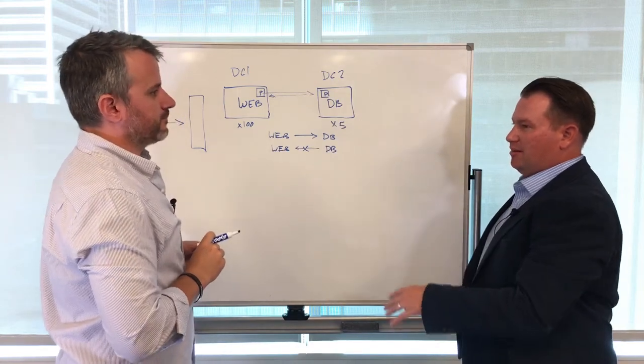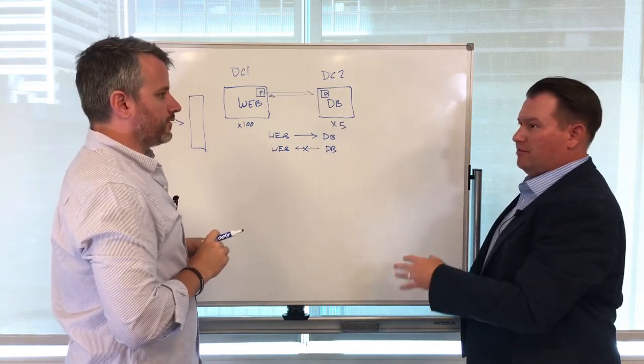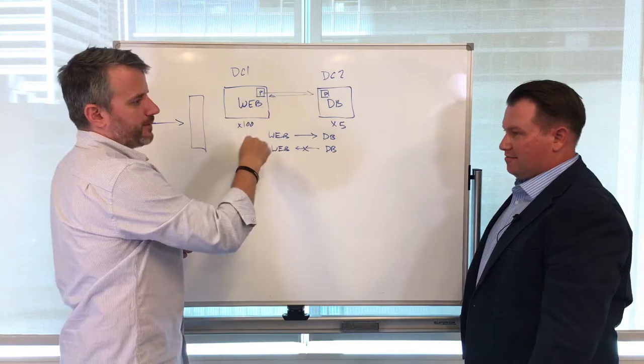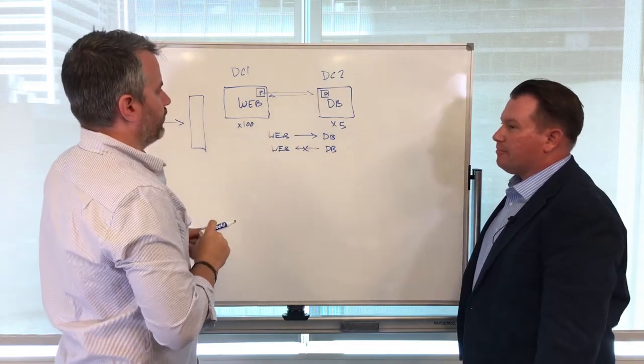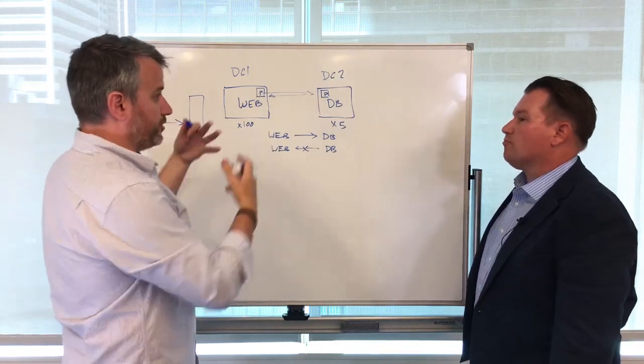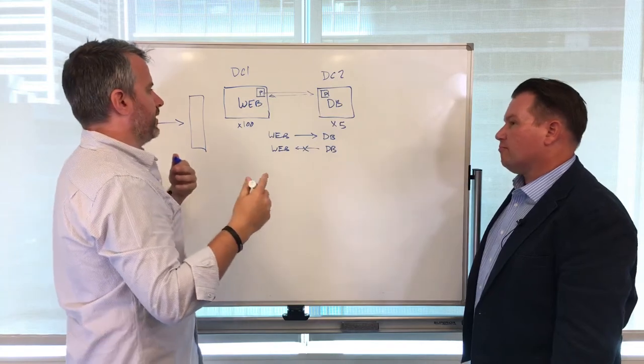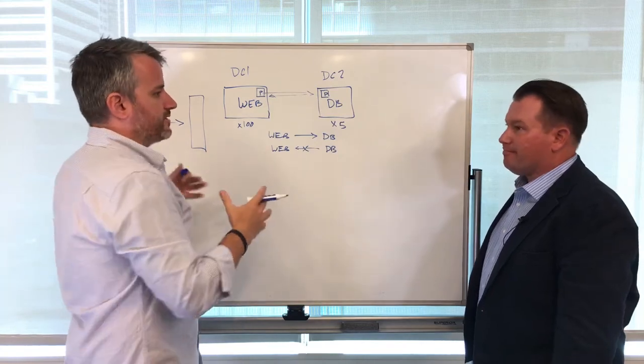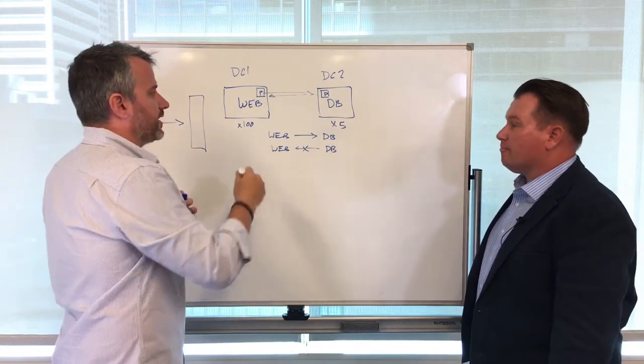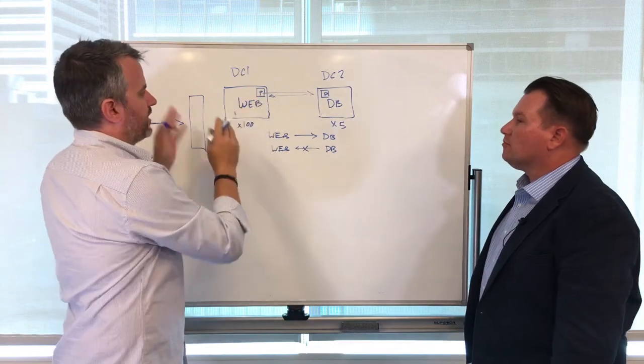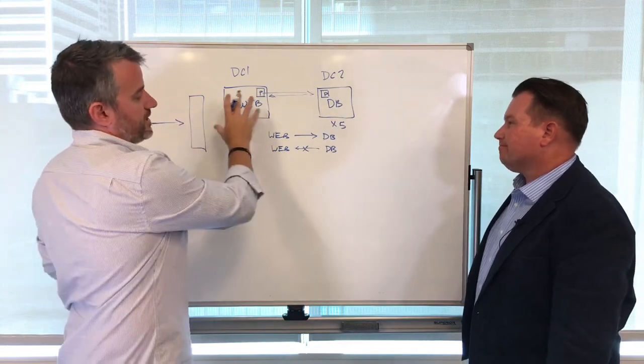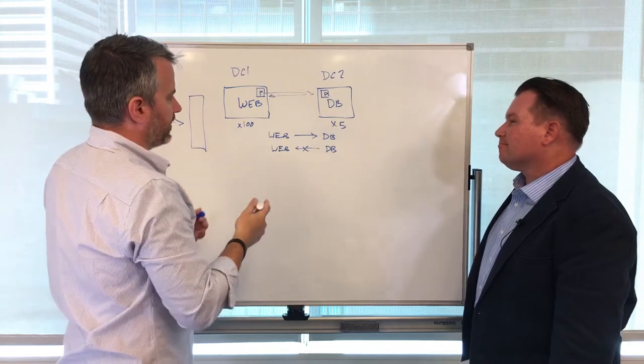So what this does is it allows us to basically scale in this massive way without ever actually having to change the rules. So if we say we're going to scale this up to handle load and we're going to add 100 more web nodes and we're going to add five more database nodes, the rules still stay the same. And for every one of these web nodes that you bring up, let's say that they were containers from an image, they all have that label of web. You don't have to go in and manually configure the IP addresses or DNS or anything like that.